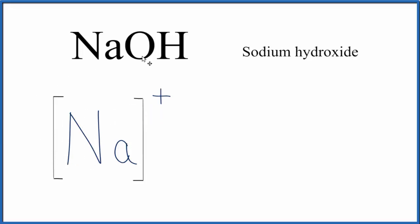Next, we'll write the Lewis structure for the OH. That's the hydroxide. That's a polyatomic ion. So we're going to put the OH right here, and the hydroxide ion has a negative charge. So we'll put brackets and a negative charge around it.